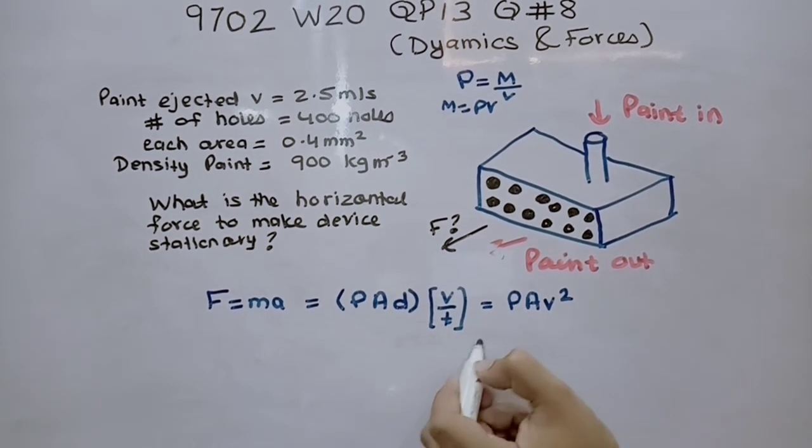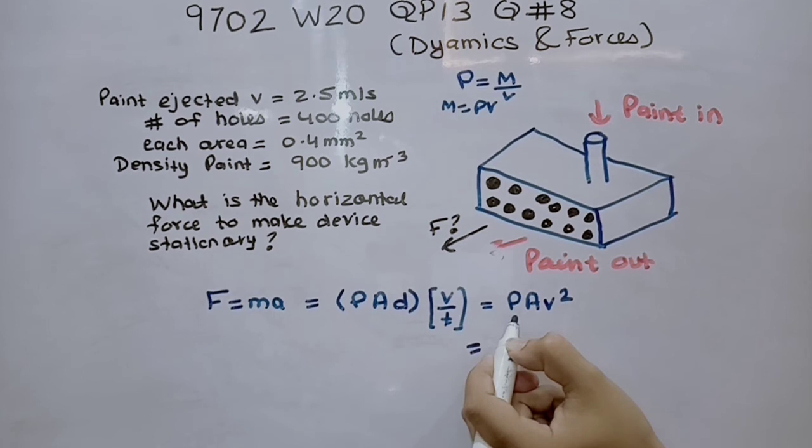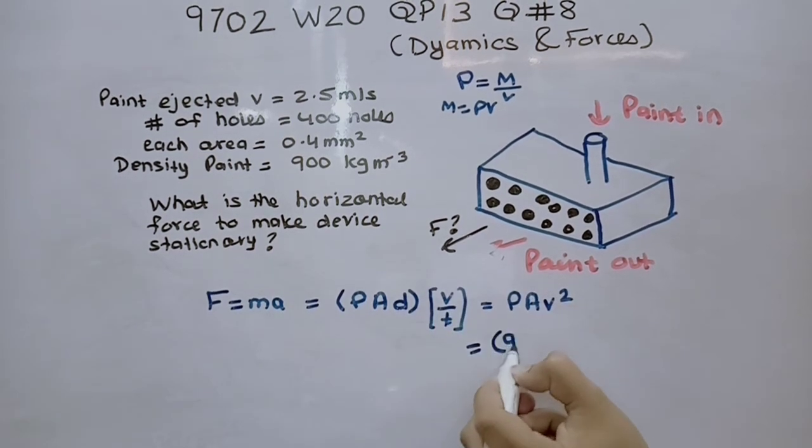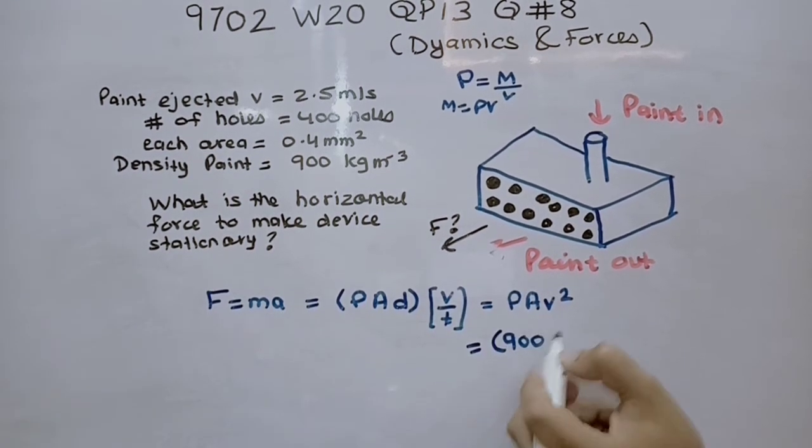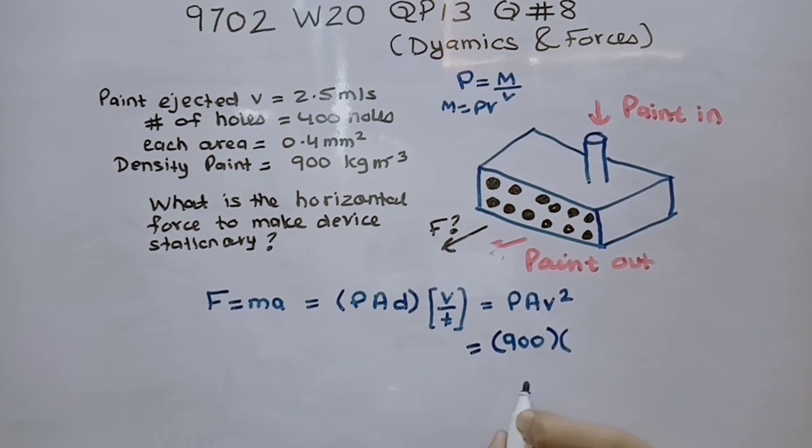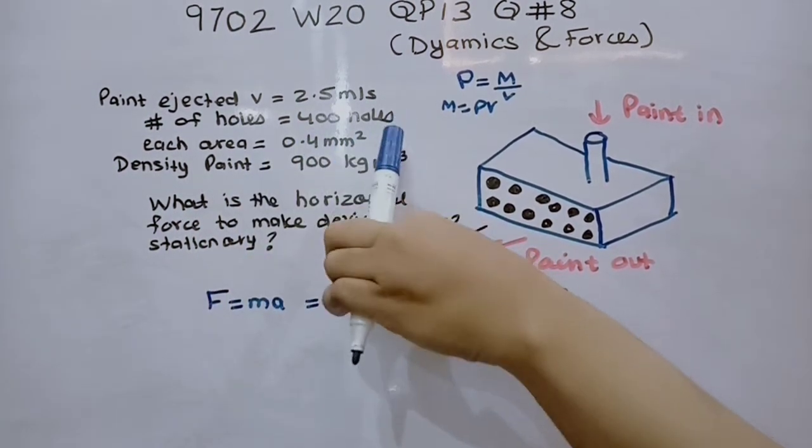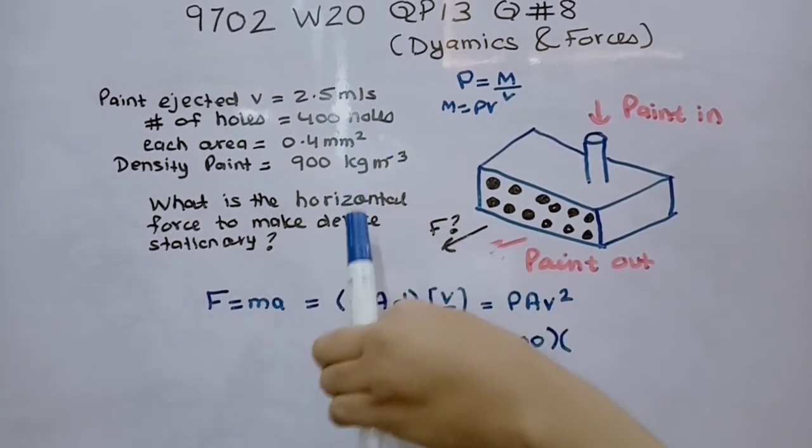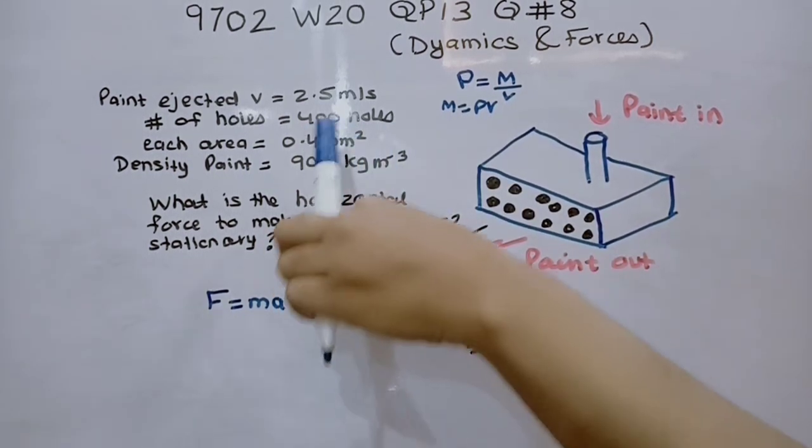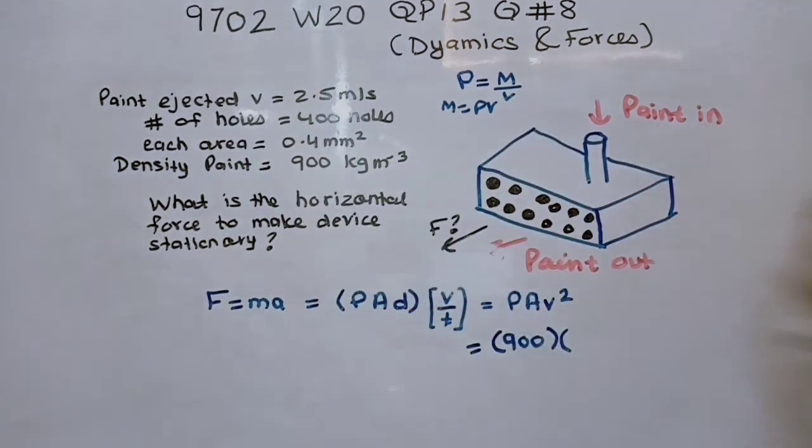Plug in the values we get density is 900 kilograms per meter cube. Area of each hole is 0.4 millimeter square. So first we will convert this millimeter into meters and multiply it by the number of holes. So we will get the total area. So this will be 400 holes into 0.4 millimeter square into meter square is by 10 to the power of negative 6.